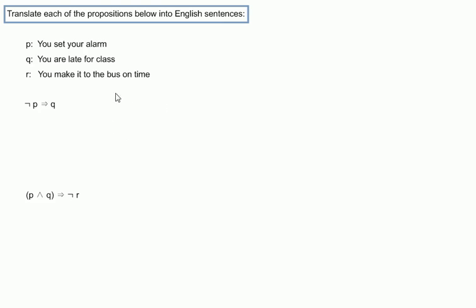So we're going to take a look at some simple examples of how we could turn these propositions P, you set your alarm, Q, you are late for class, R, you make it to the bus on time, how we could translate a logical proposition, a compound proposition here that uses those simple propositions.